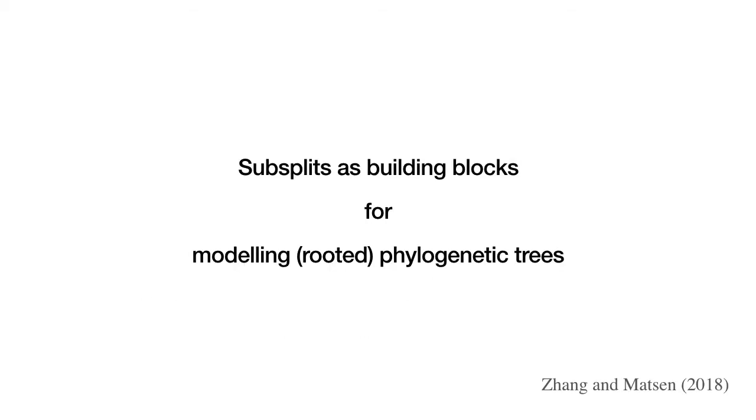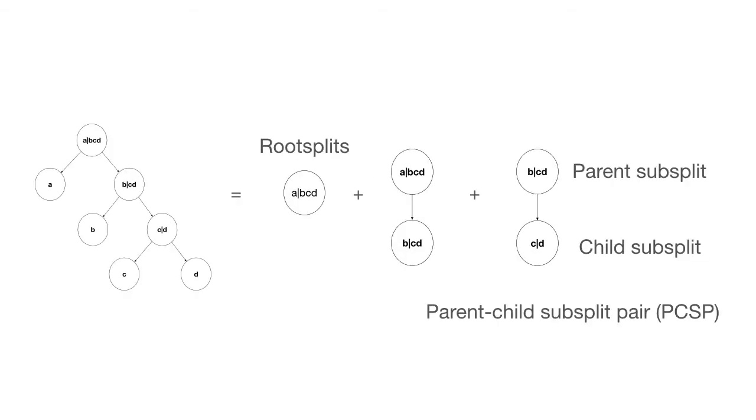To truncate the tree space, we are going to use the idea of subsplits, presented in the 2018 NeurIPS paper by Zhang and Messon. The core idea is that we can build a tree in a top-down fashion by first choosing how to split all of the taxa, then recursively each child splits one of the two clades until there is nothing to split. So here we split taxa-A from taxa-B-C-D. The first split is referred to as root split. Then we split clade-B-C-D, so B splits off from C and D.